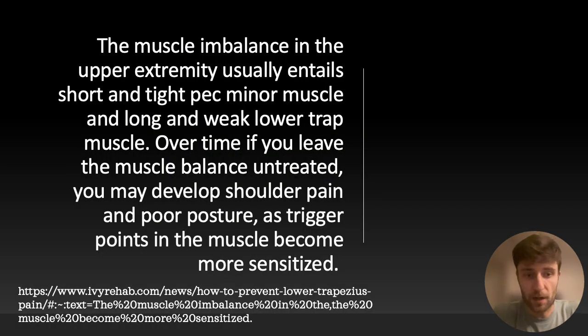This is from ivyrehab.com. You can see the URL right there. I tried highlighting this, it did not work well. So instead, I'm going to try and underline. The muscle imbalance in the upper extremity usually entails a short and tight pec minor, and a long and weak lower trap muscle.